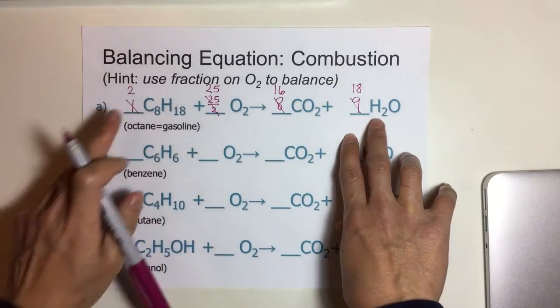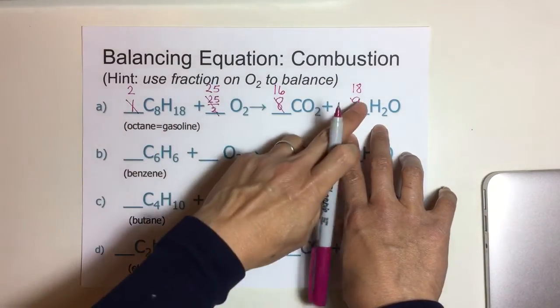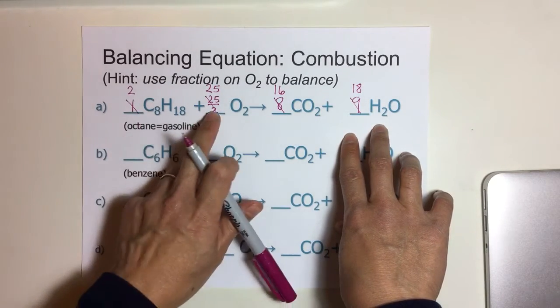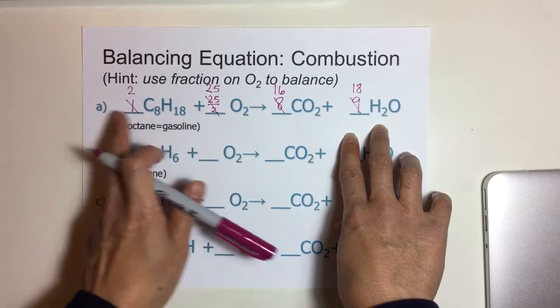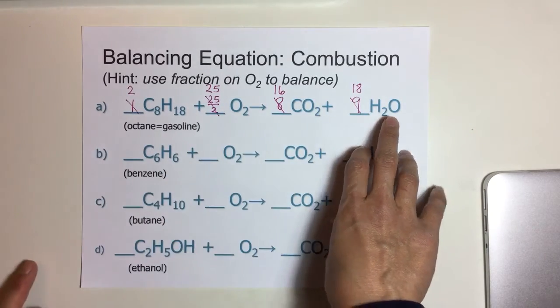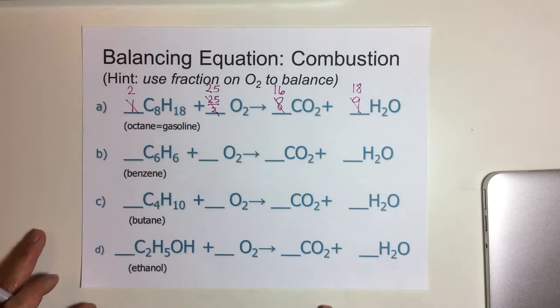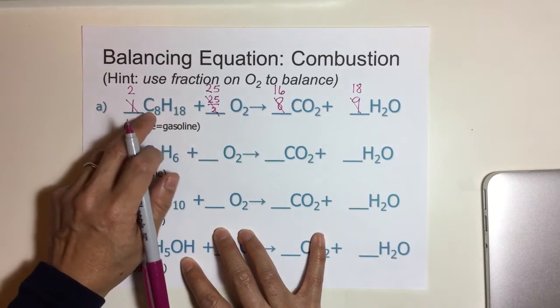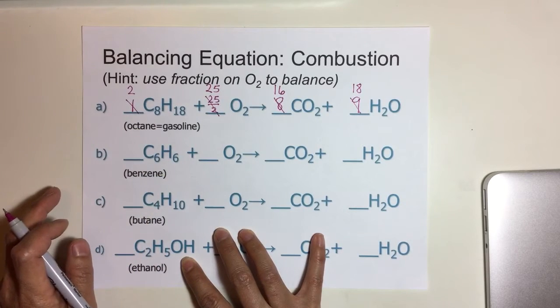So the coefficients are 2, 25, 16, and 18. Notice how we got rid of the fraction as a result of multiplying by the denominator that you see here, which is 2. Let's go on to the next. This next substance, by the way, this is octane—you notice 8 carbons, so it's an octane.